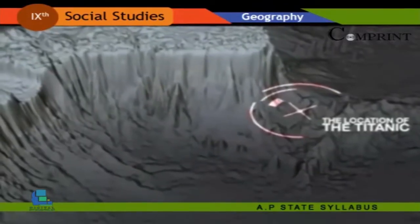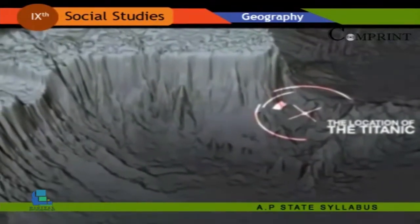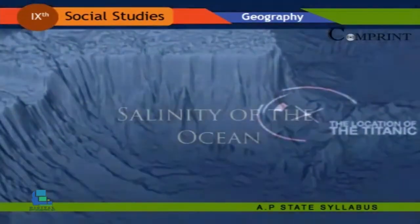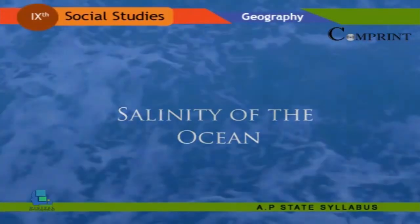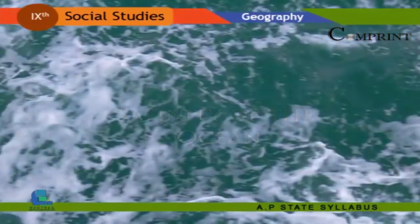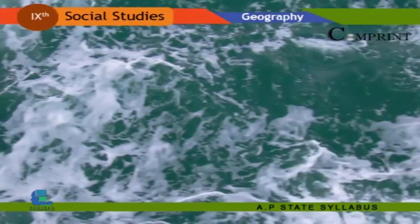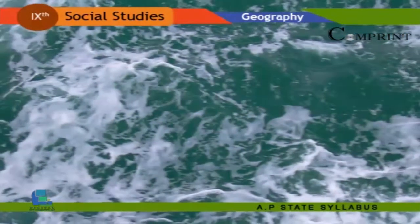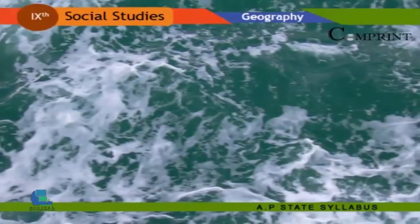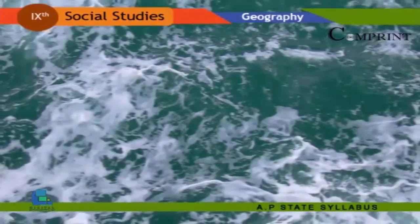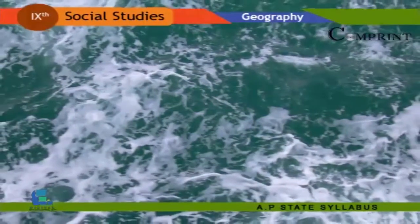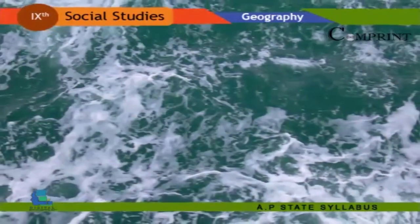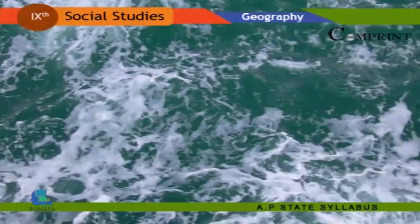Contrary to our expectations, most of the deepest trenches are not located in the midst of oceans — they are found closer to the continents. Salinity of the ocean: Most of the salt in the oceans comes from land. Over millions of years, rain, rivers, and streams have washed over rocks containing sodium chloride and carried it into the sea.